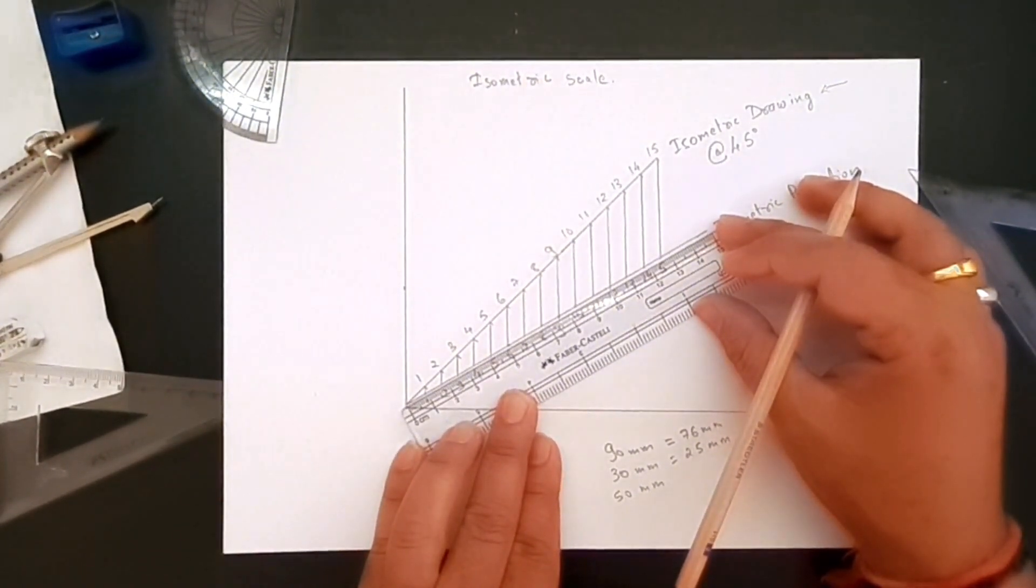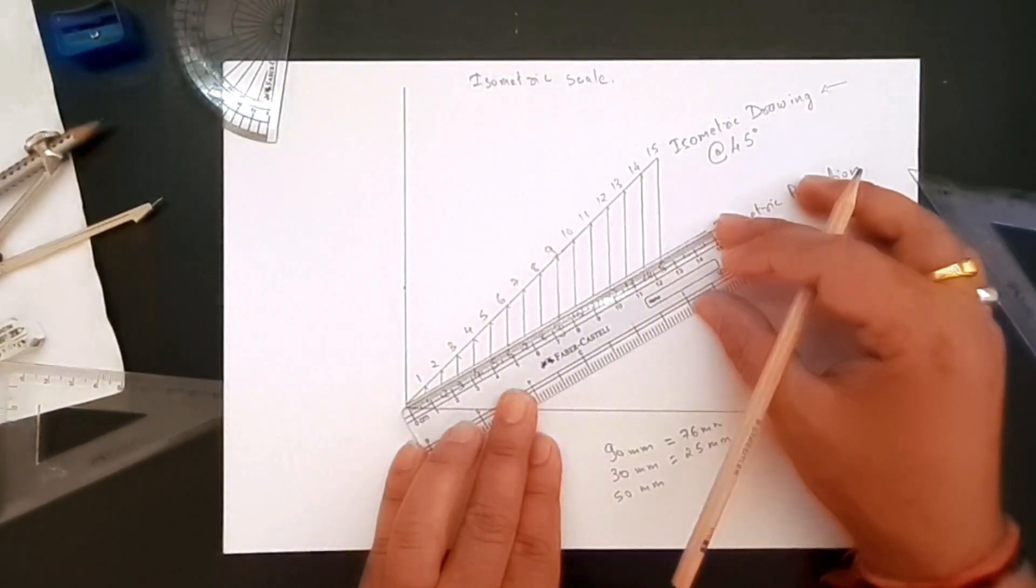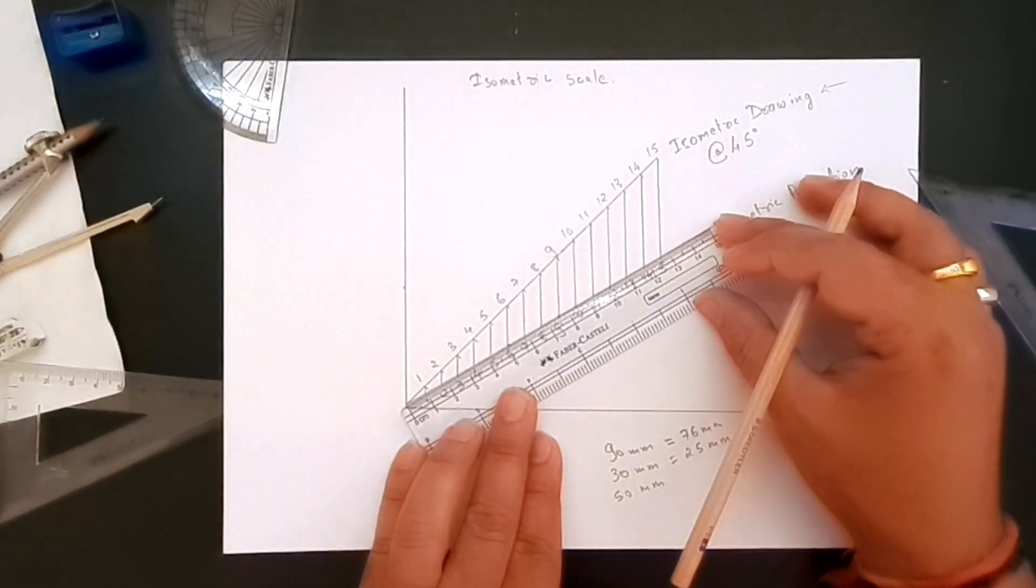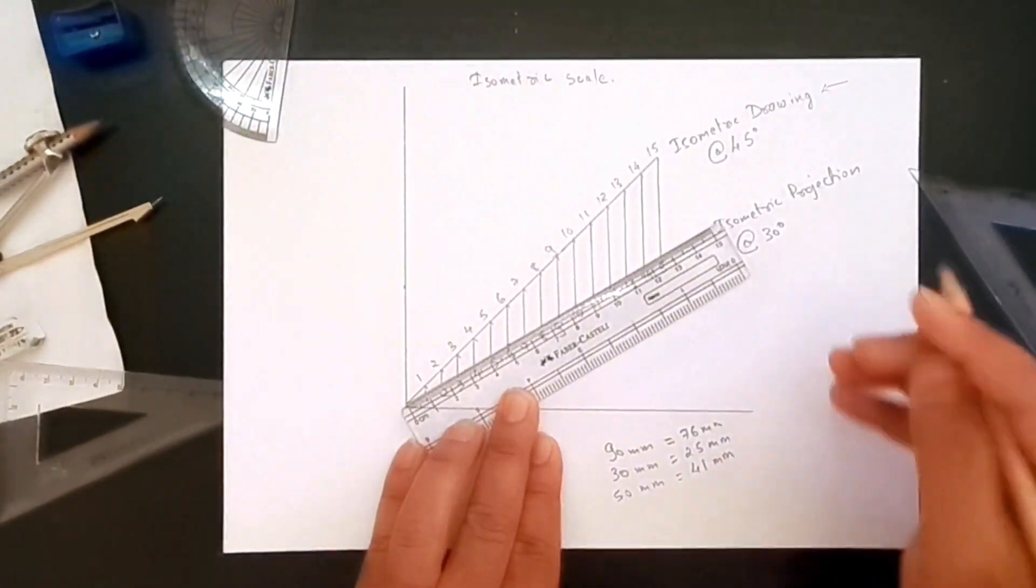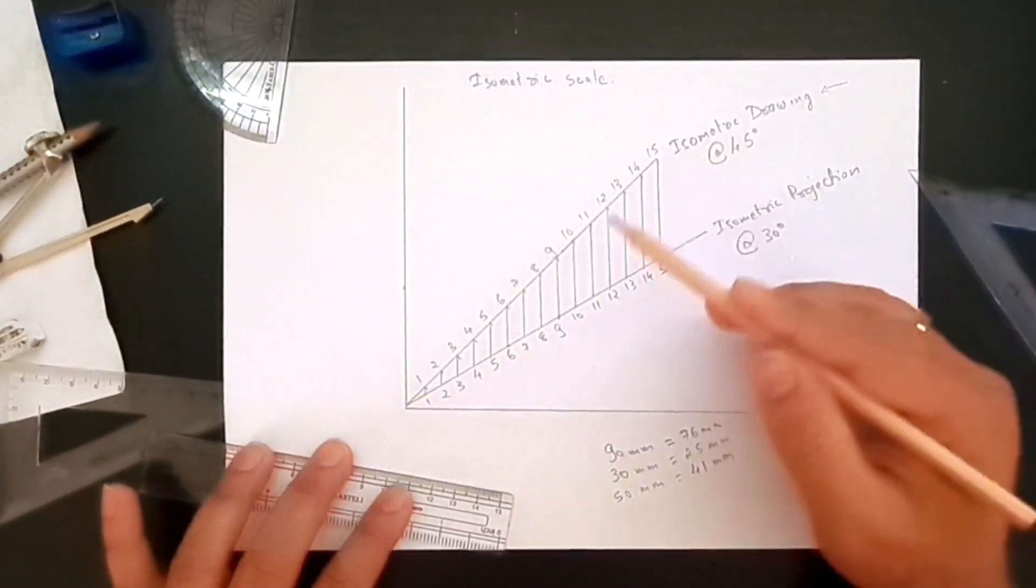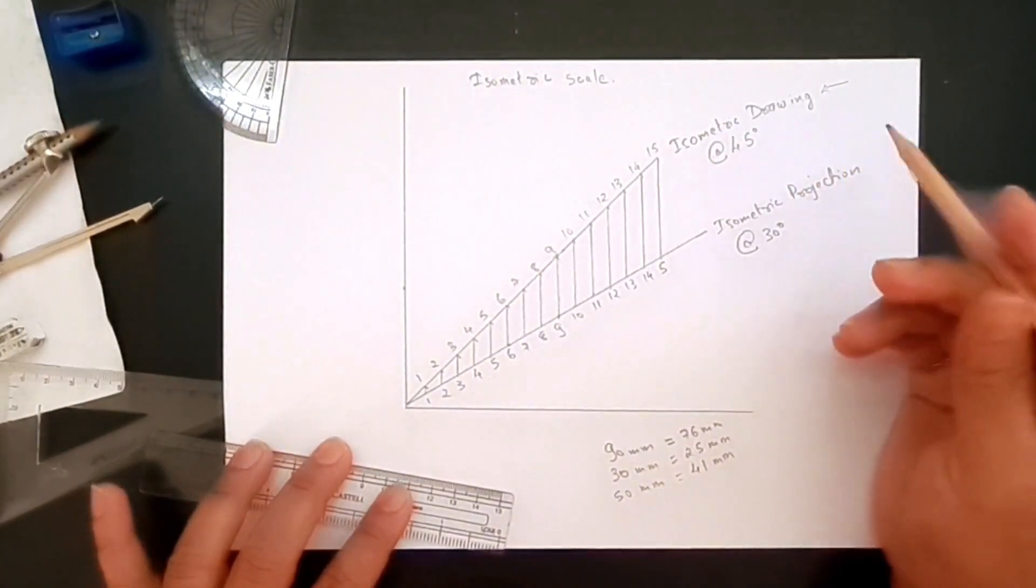And 50 millimeters becomes 40, 41. So that's how you create your isometric scale. Thank you all and see you in the next video.